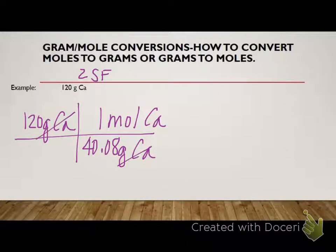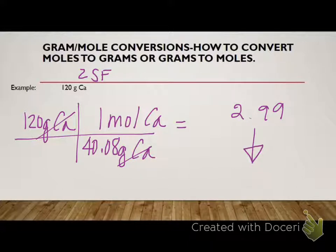So now this cancels out. And then I have a number on the top, number on the bottom, so what do I do? I divide. If I divide that, I get 2.99 and some change. But I need two significant figures, so I would report that that is 3.0 grams of calcium.